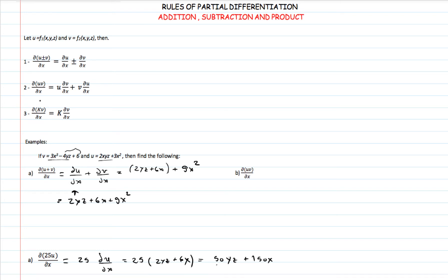The other case is when we have multiplication — the partial derivative of the product of two functions. We multiply one function by the partial derivative of the other with respect to the required variable, then add to it the other function multiplied by the partial derivative of the first function. So we find the partial derivative of v with respect to x, multiplying by u treated as a constant, plus v treated as a constant multiplied by the partial derivative of u.